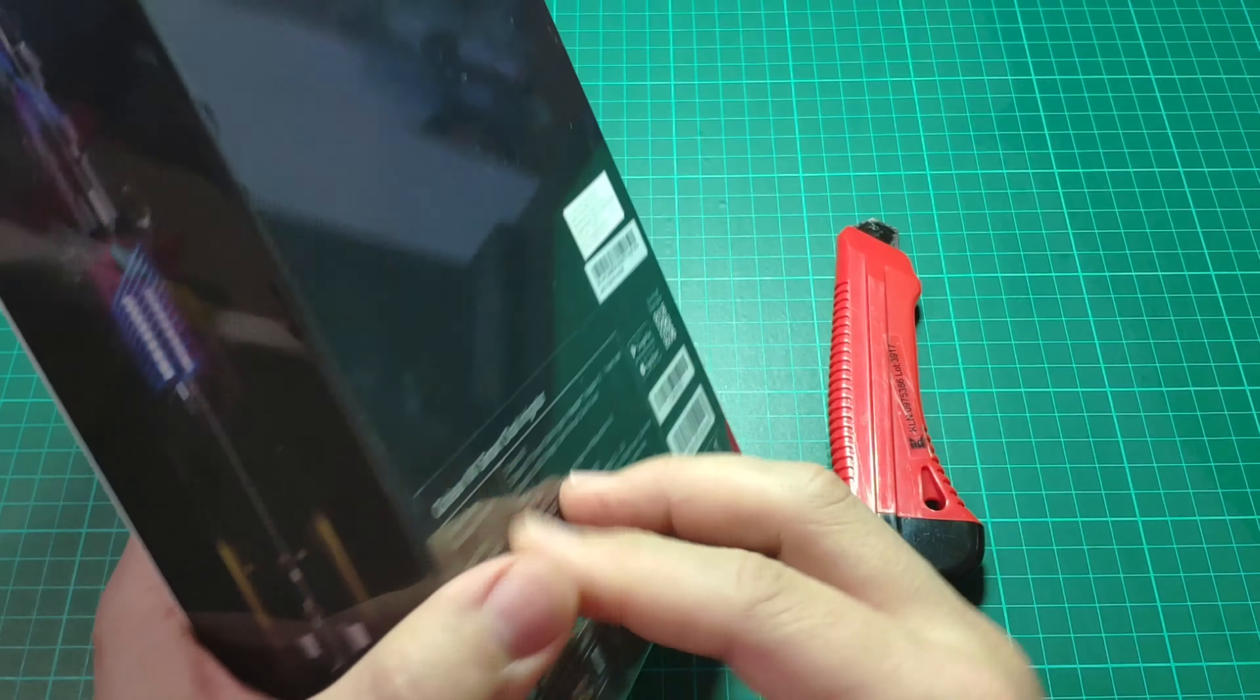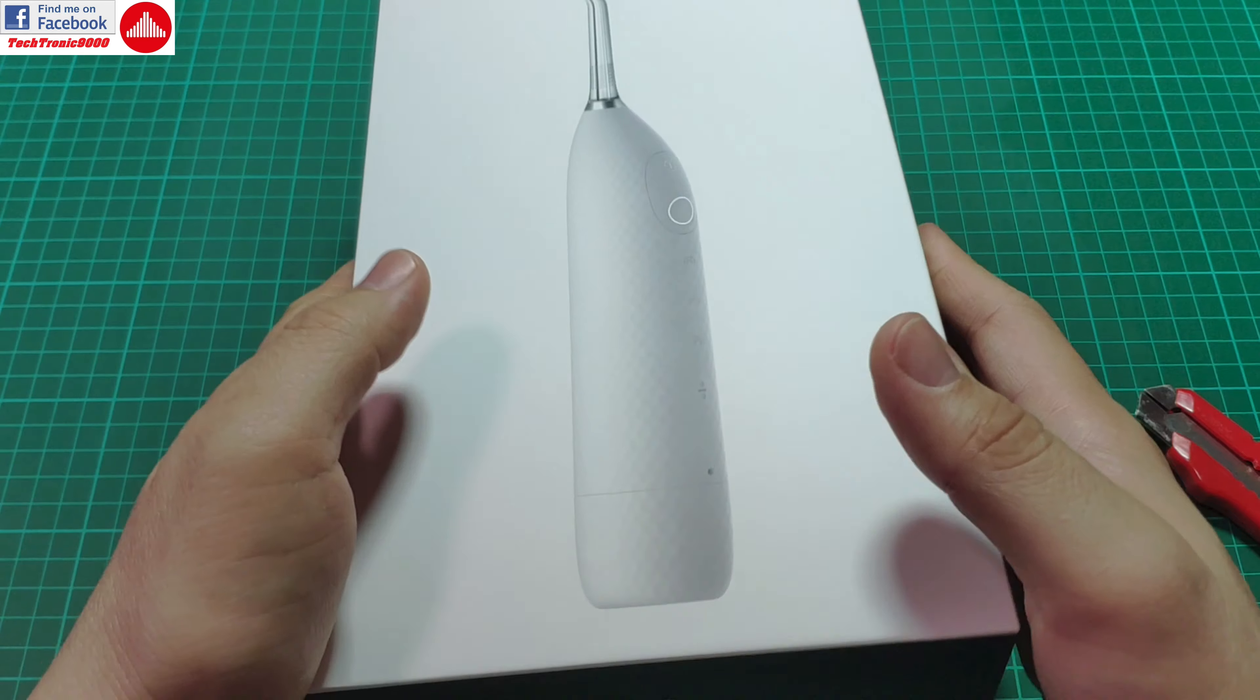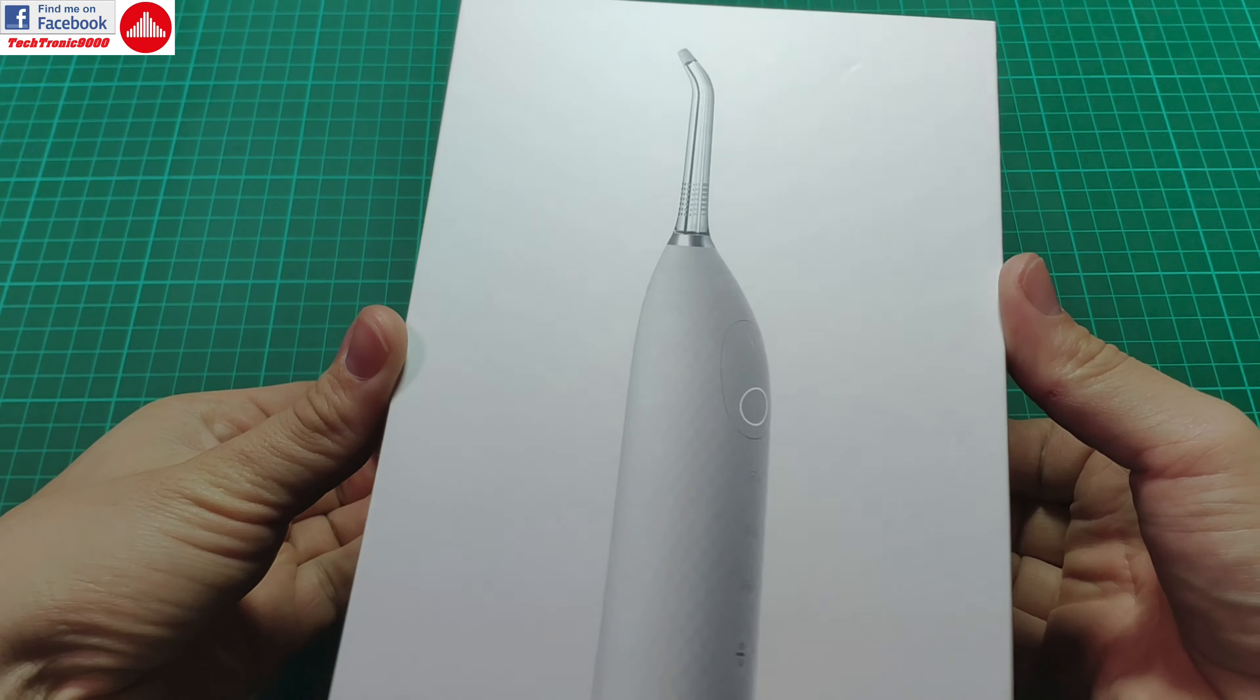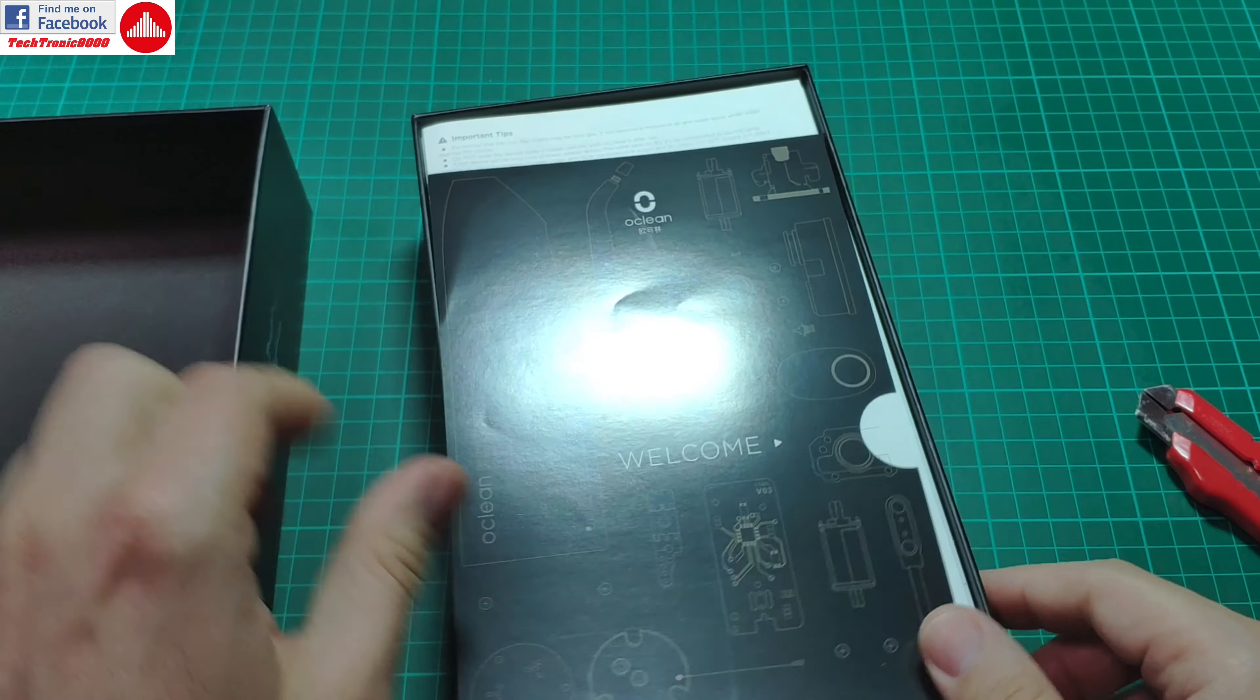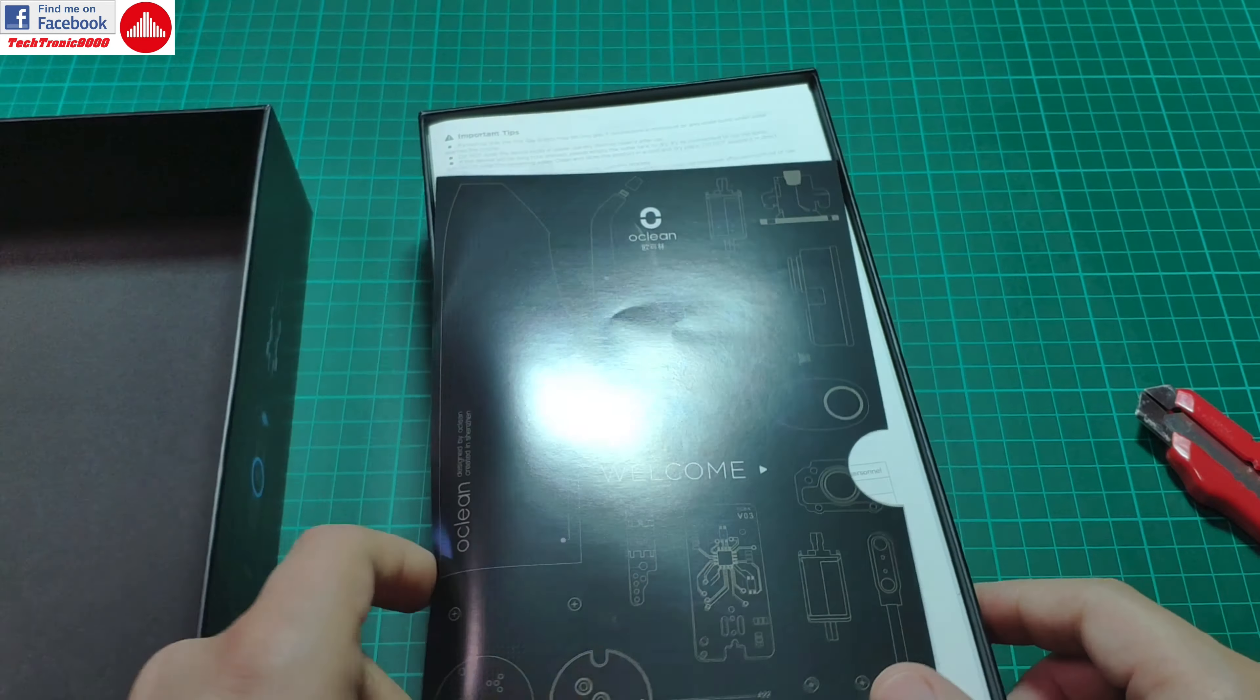First I'm going to take it out of the box. We get a welcoming card, a large manual which is in Chinese on one side and Chinese and English on the other side. We get English, that's good.